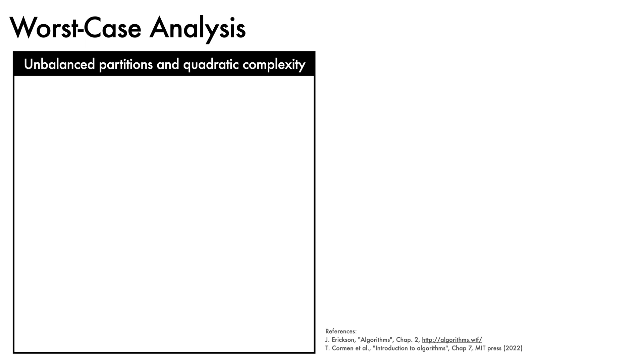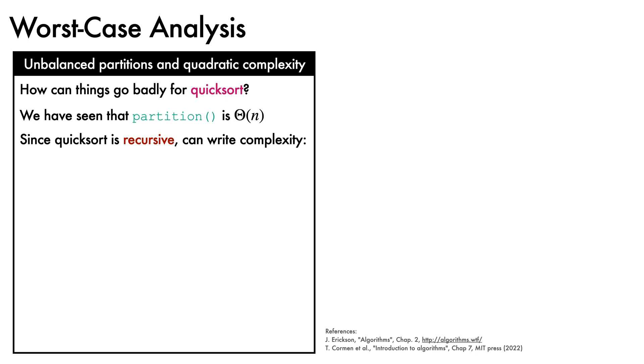We now come to the analysis. We mentioned earlier that the worst case behavior of quicksort is quadratic. How is it that things can go badly for quicksort? We've already seen that the partition function, whether Lomuto or Hoare, is big theta of n. Since quicksort is a recursive function, we can describe its total runtime as T(n) equals T(r-1) plus T(n-r) plus big theta of n, where r is the rank of the pivot.